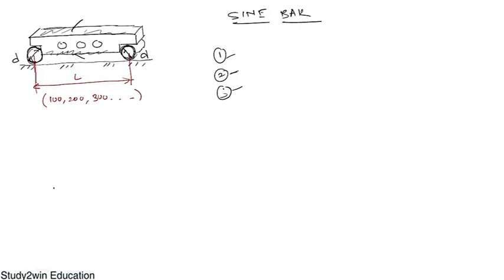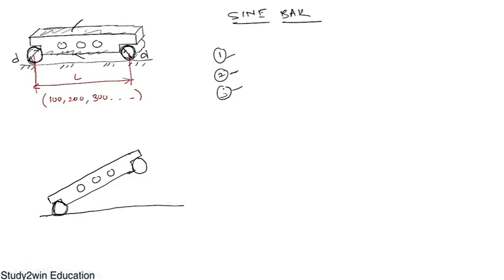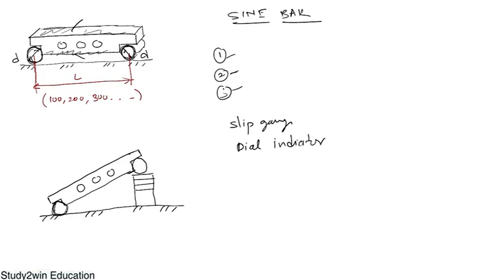Now I will draw a diagram for use of a sine bar. We have the sine bar kept on a surface table. Sine bar is not a complete instrument in itself — having a sine bar alone will not give you the exact angle. The sine bar always works in association with slip gauges, a dial indicator, and a dial indicator stand. These are the additional instruments required while working with a sine bar.